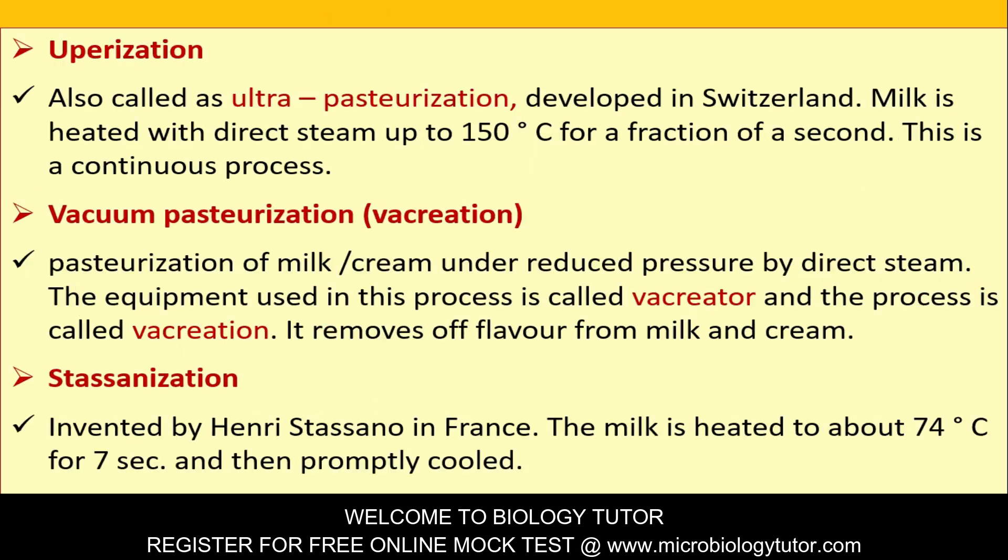Uperization, also called ultra pasteurization and developed in Switzerland, involves heating milk with direct steam up to 150°C for a fraction of a second in a continuous process. Vacreation is pasteurization of milk or cream under reduced pressure by direct steam using equipment called a vacreator — it removes all flavor from milk and cream. Stassanization, invented by Henry Stassano in France, involves heating milk to about 74°C for 7 seconds and then properly cooling it.